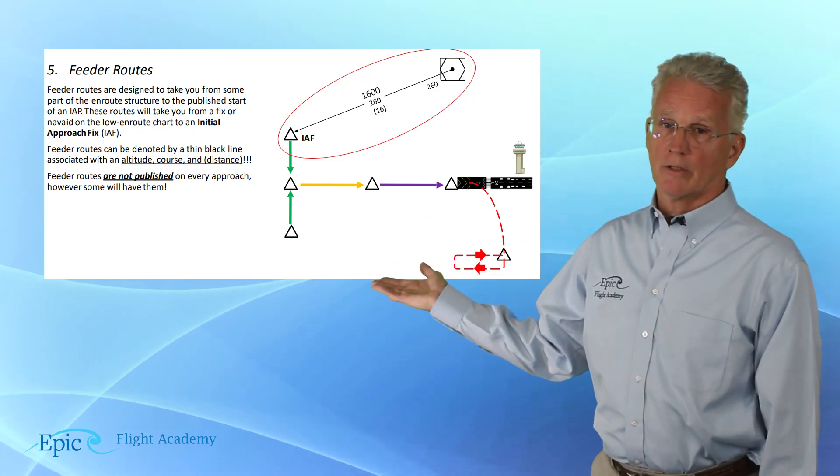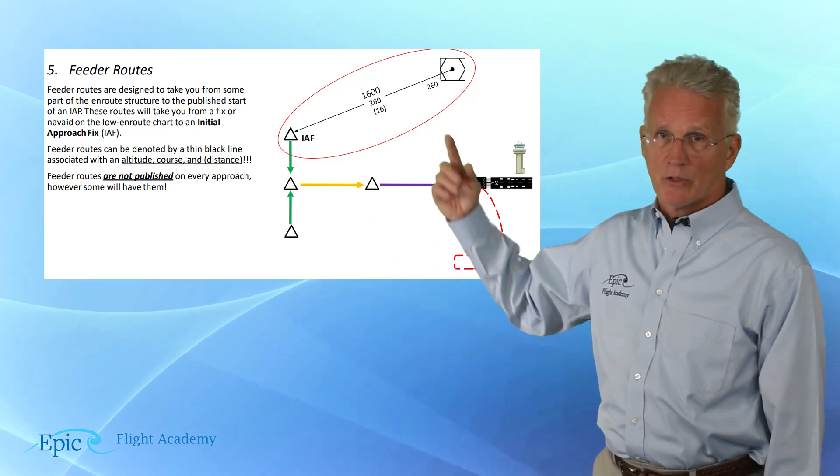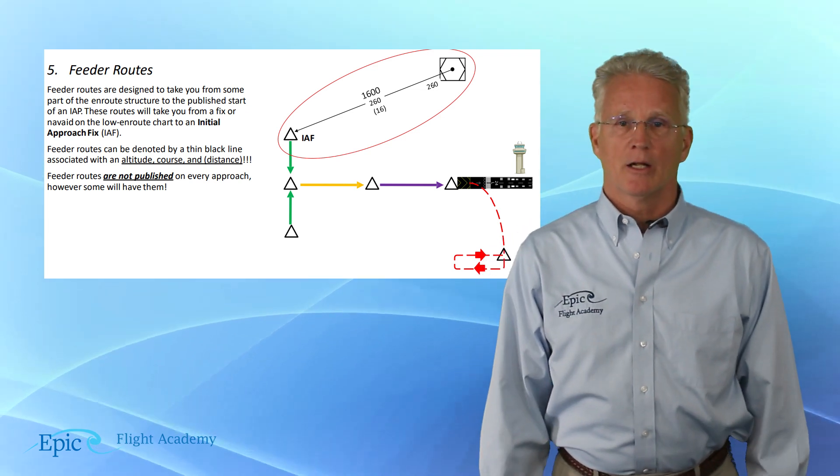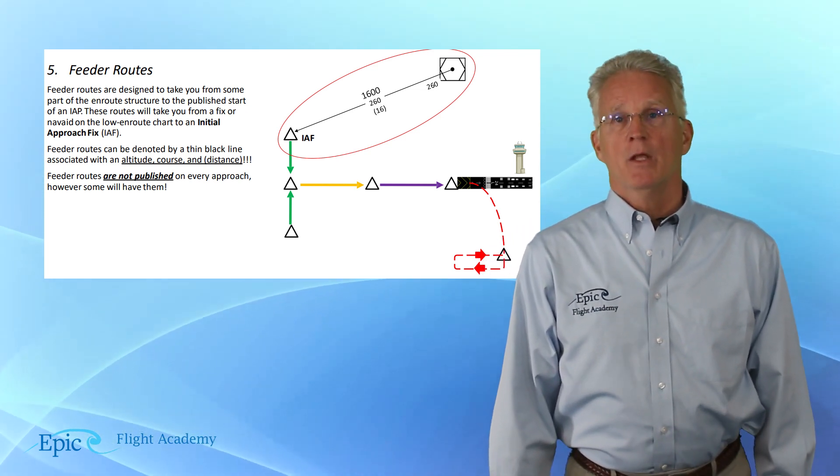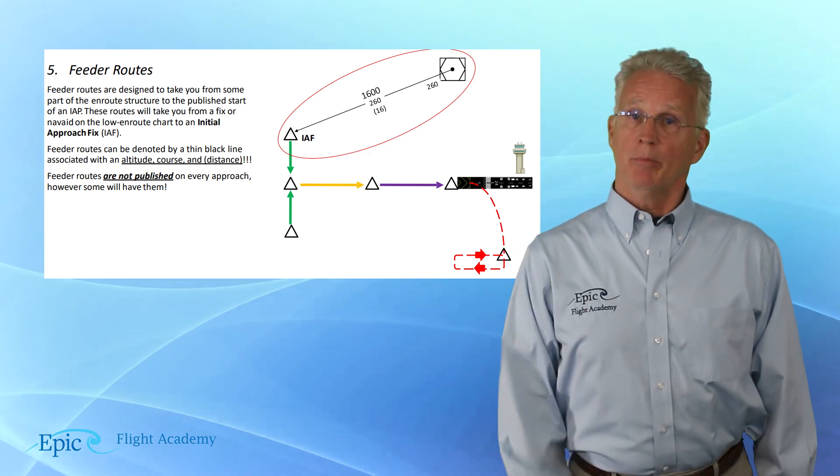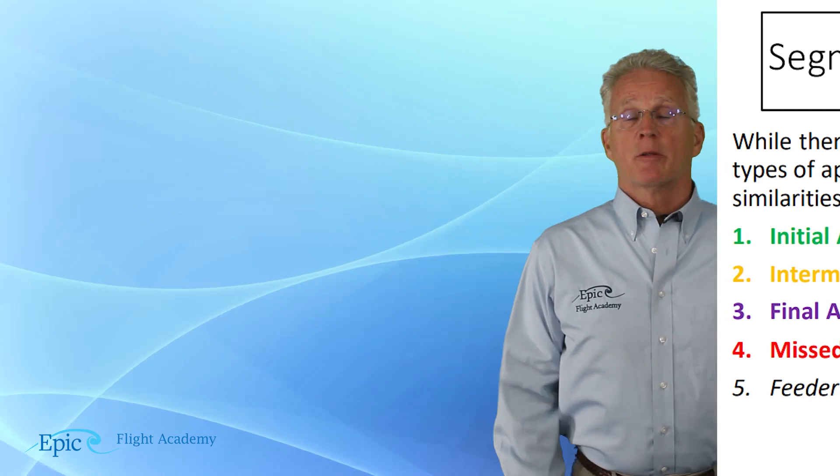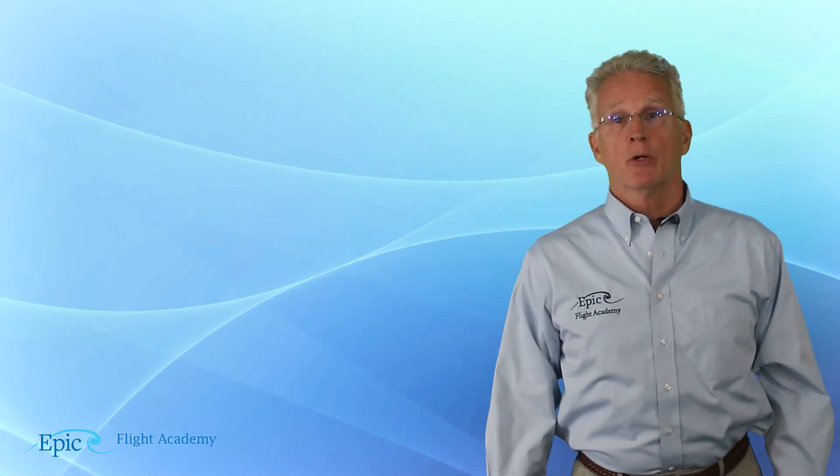Feeder routes can be denoted by a thin black line and are associated with an altitude, course, and distance. So if you take a look at our example here, we've circled it in red, a thin black line, and you see an altitude, course, and distance. These feeder routes are not published on every approach.